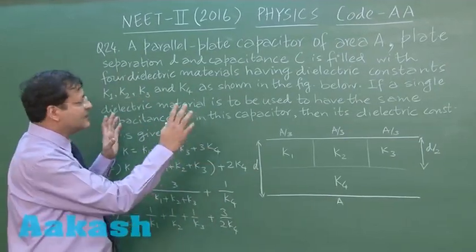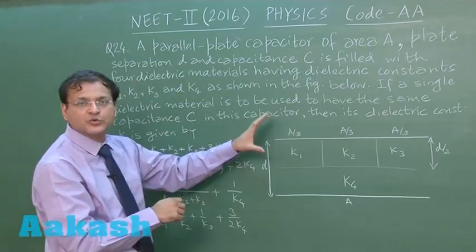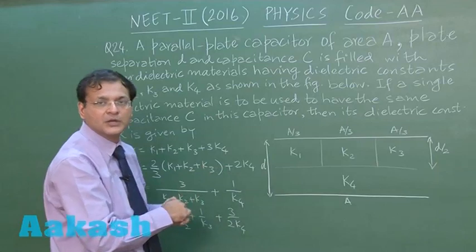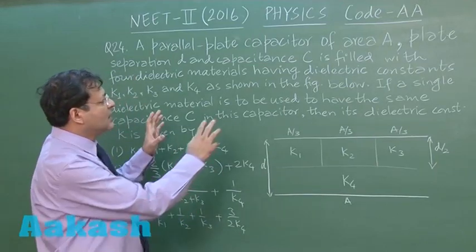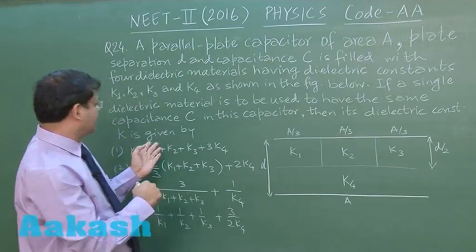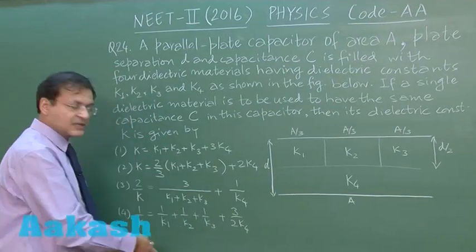Now they are asking if a single dielectric material is to be used, like you have to find out the equivalent dielectric constant of all the 4 dielectric materials. So have the same capacitance C in this capacitor, then its dielectric constant K is given by, and the options are as follows.